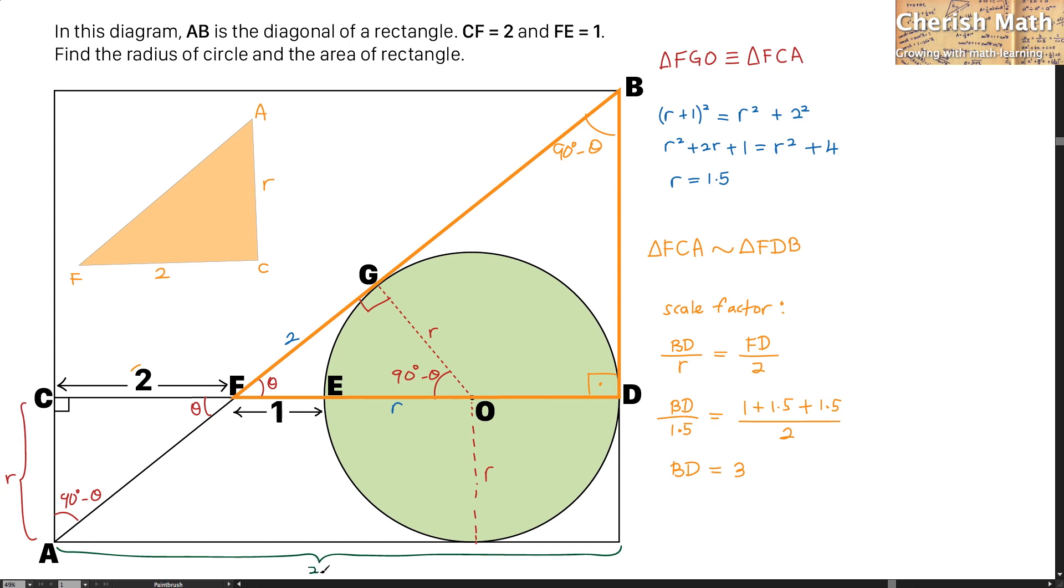And that is going to be 2 plus 1 plus 1.5 plus 1.5 and the sum of this is going to be 6.